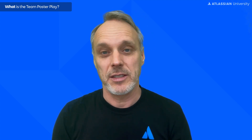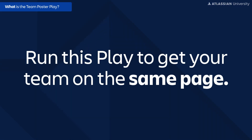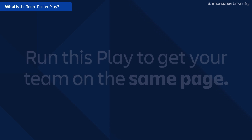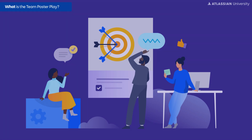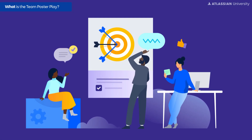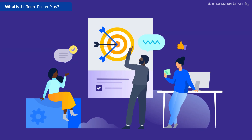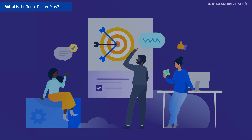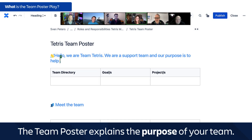Run this play to get your team on the same page on what you want to achieve together and create a shared direction for where the team is going. It gives your team more clarity on the direction and gives every team member the opportunity to build a common team purpose together. A shared understanding is important to move work forward and to get clarity on your goals without having this discussion over and over again. The team poster also explains to new team members or people from other teams the purpose of your team.